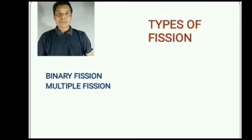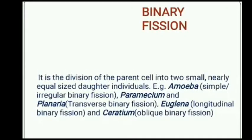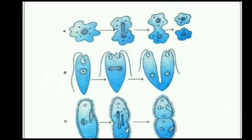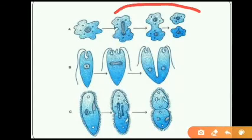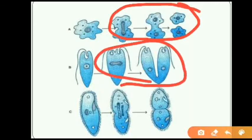There are two types of fission: binary fission and multiple fission. What is binary fission? It is the division of the parent cell into two small, nearly equal-size daughter individuals. Examples of organisms with binary fission are amoeba. Binary fission in amoeba is the irregular type; in euglena it is the longitudinal type; and in paramecium it is the transverse type.